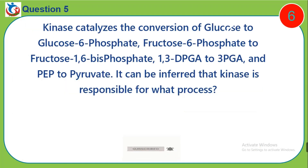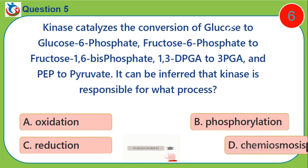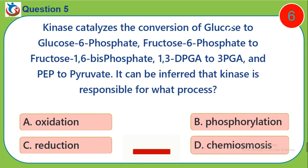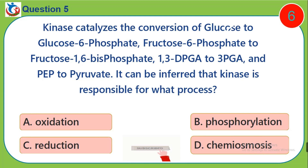Question 5. Kinase catalyzes the conversion of glucose to glucose 6-phosphate, fructose 6-phosphate to fructose 1-6-bisphosphate, 1-3-diphosphoglycerate to 3-phosphoglycerate, and phosphoenolpyruvate to pyruvate. It can be inferred that kinase is responsible for what process? A, oxidation. B, phosphorylation. C, reduction. D, chemiosmosis.